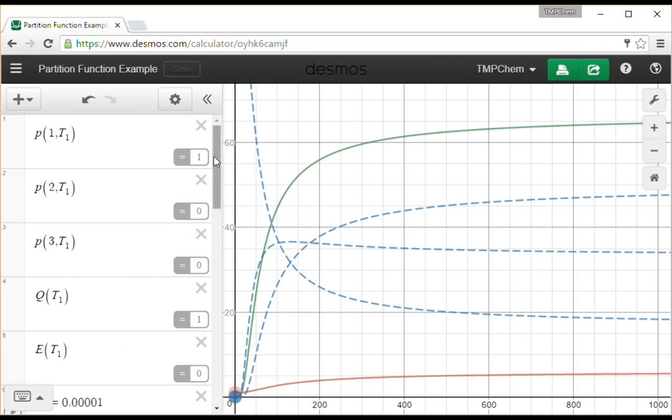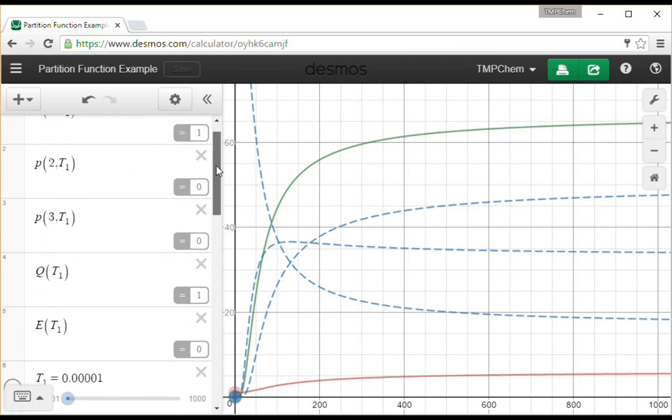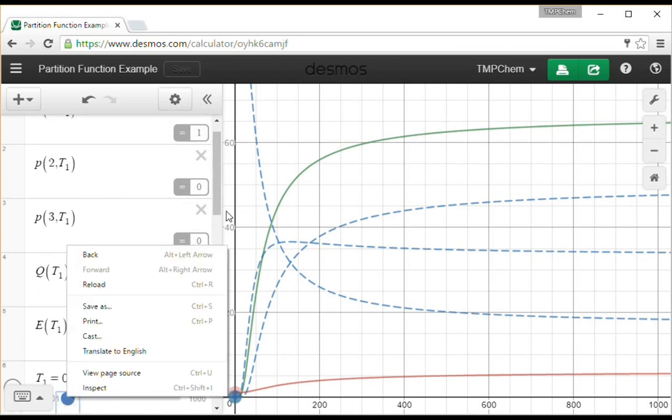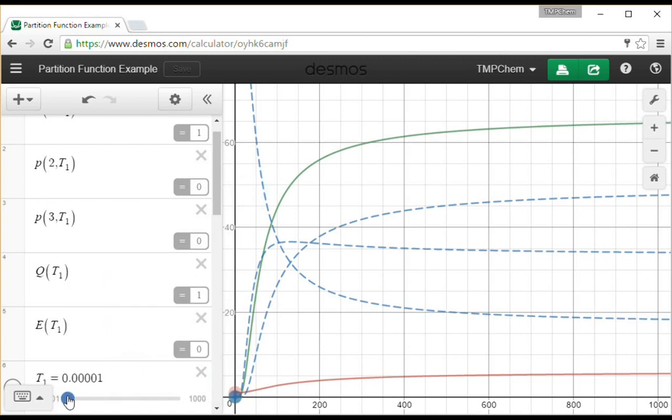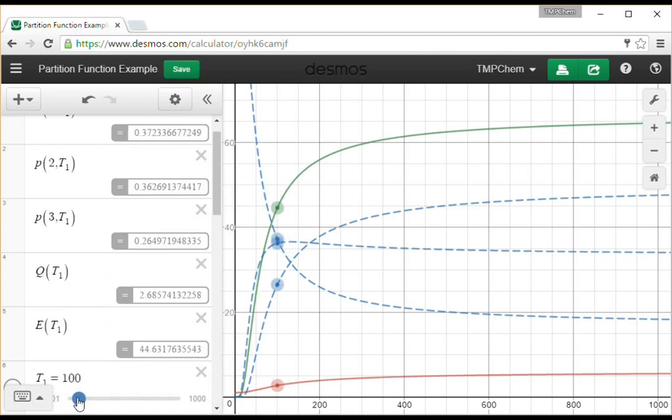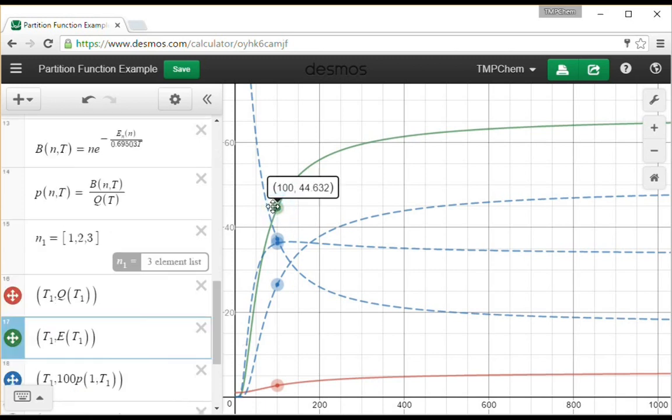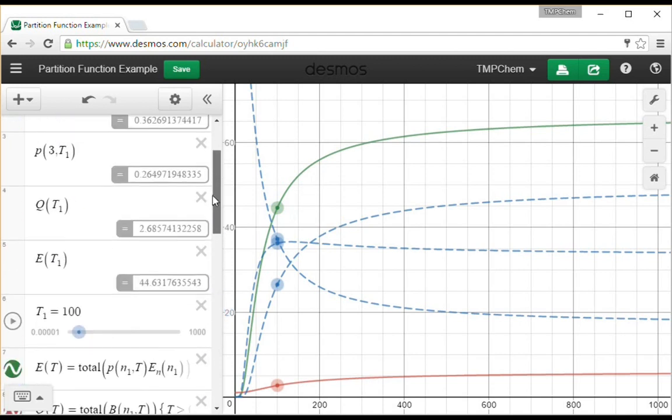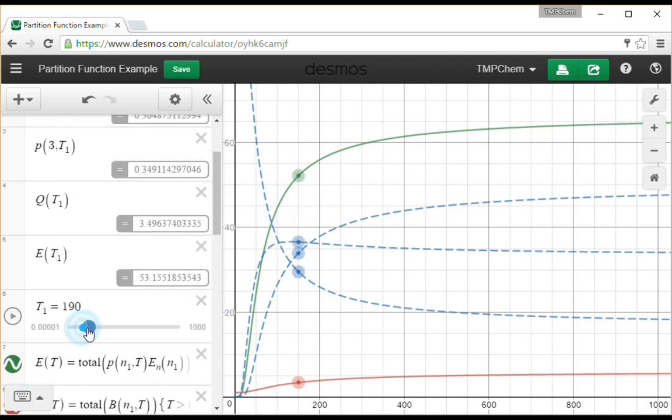So as I take my temperature and I slide it up here to various values, you see at 0 the energy is 0. If I move that up to 100, you can see what I saw there, the energy levels, the energy is getting up there, it's 44.6. Then as the energy continues to go up, the probabilities change and the energy is approaching that final value that I mentioned where it's going to approach 66 as the temperature gets very high.